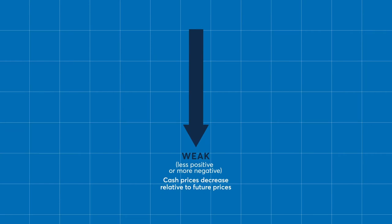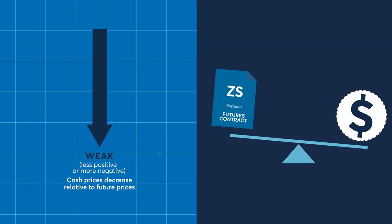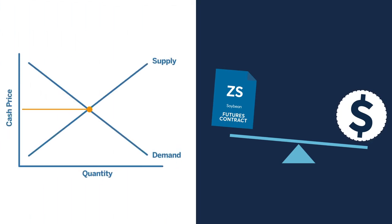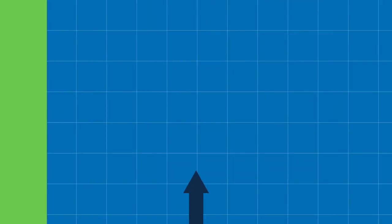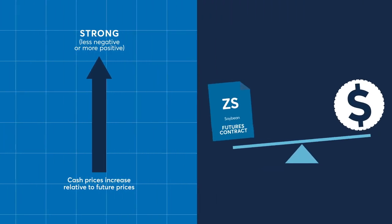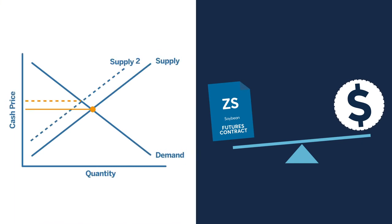For the North American region, the BASIS is referred to as weak when cash prices are low relative to the U.S.-based CBOT futures price. This typically occurs when supply of a physical commodity is great relative to demand at the cash market location. Conversely, the BASIS is considered strong when cash prices are high relative to the CBOT futures price. This occurs when supply of a physical commodity is tight relative to demand.